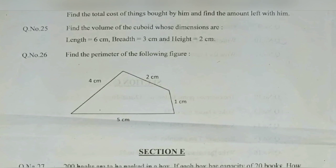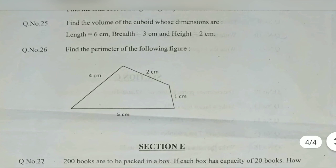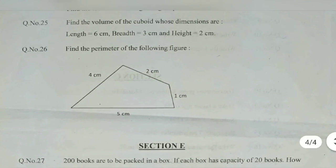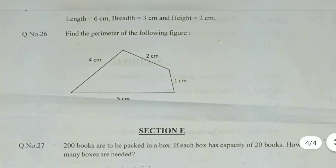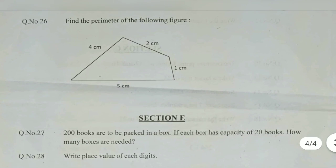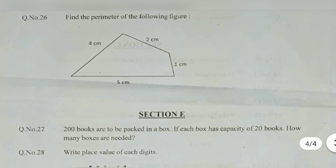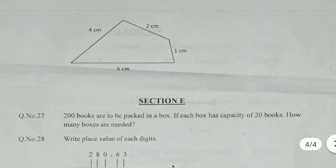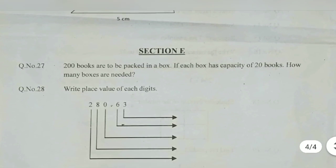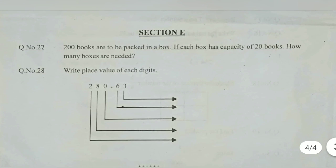Find the volume of the cuboid whose dimensions are length 6 centimeters. The volume of the cuboid is equal to length into breadth into height. Just multiply length, breadth, height. Find the perimeter of the following figure - perimeter means add all sides length. That is 4 plus 2 plus 1 plus 5: 4 plus 2 is 6, 6 plus 1, 7 plus 5 is 12. 12 is the answer.